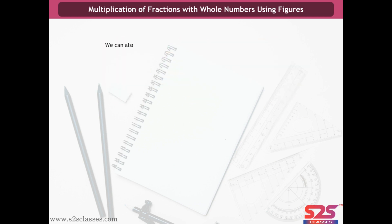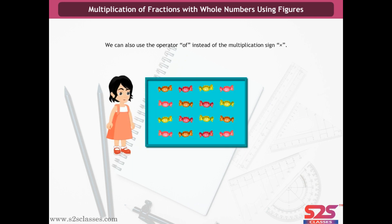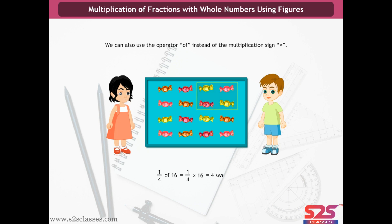We can also use the operator 'of' instead of the multiplication sign. Suppose Aisha has 16 sweets and Aman has 1/4 of the number of sweets Aisha has. Aman has 1/4 of 16, that is 1/4 × 16 = 4 sweets.